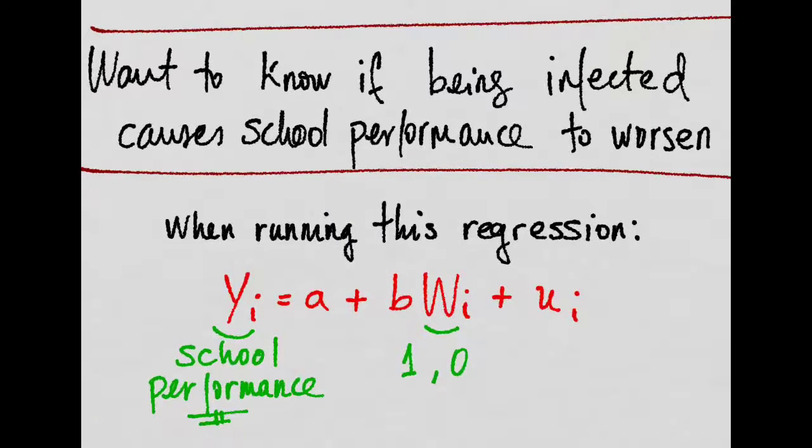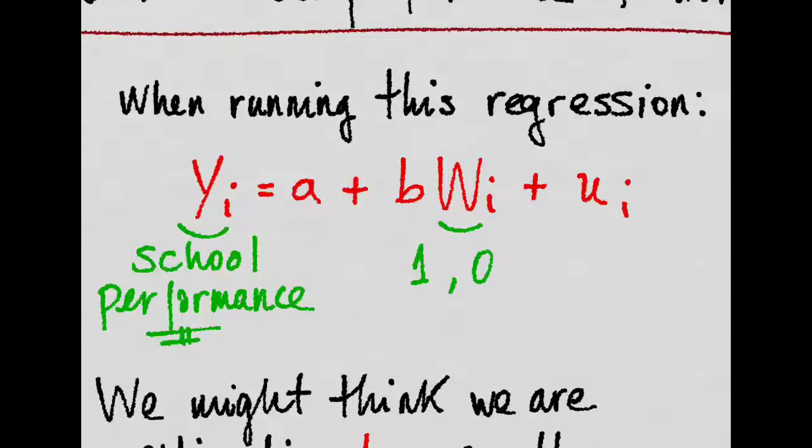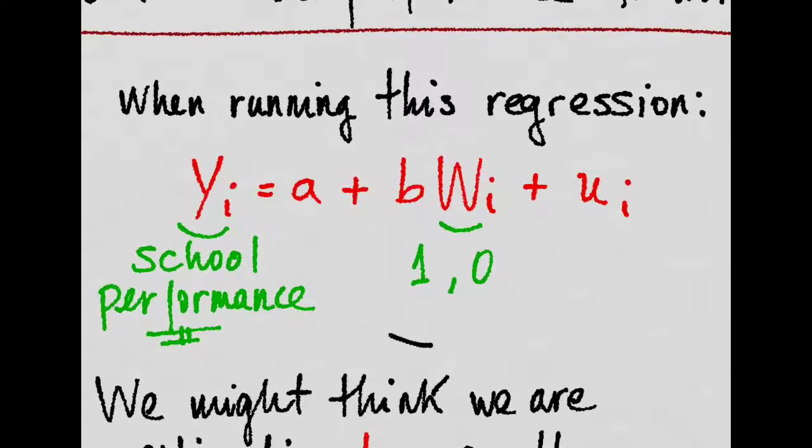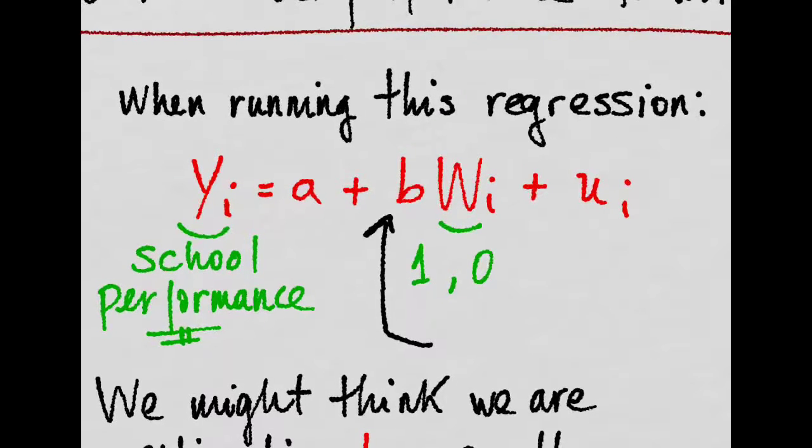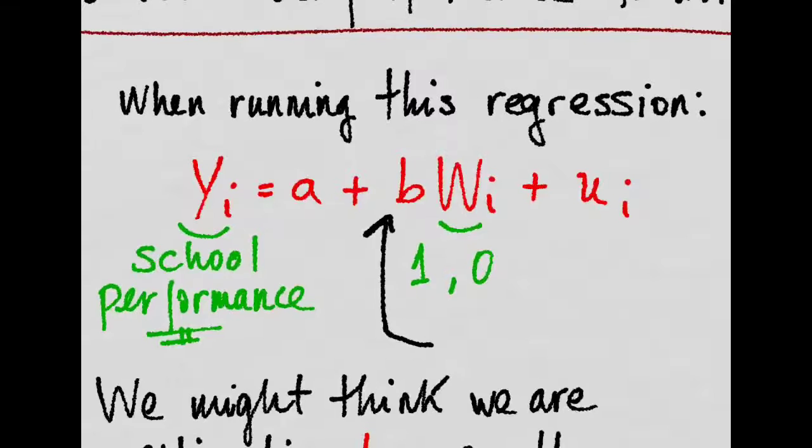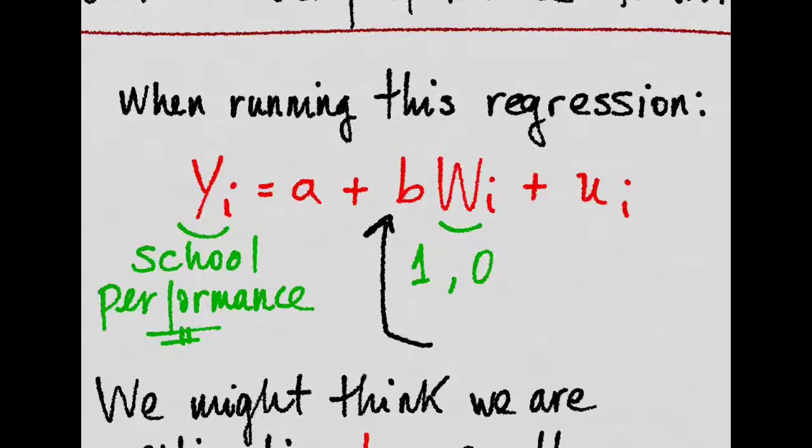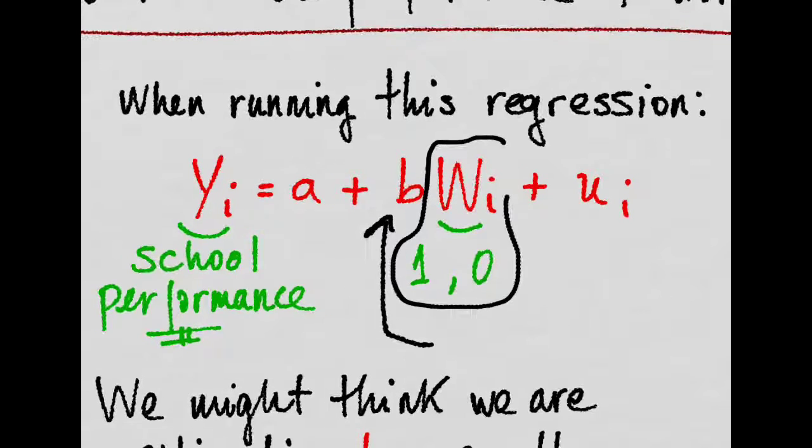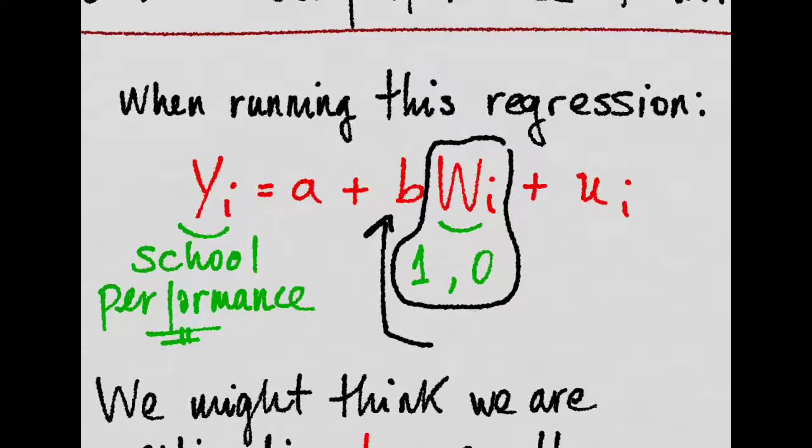Now, we might be just tempted to run this regression here. A very simple regression that wants to test what is the effect of having this disease on school performance. And we use a dummy variable that takes the value of 1 if the individual has the disease and 0 if he doesn't.